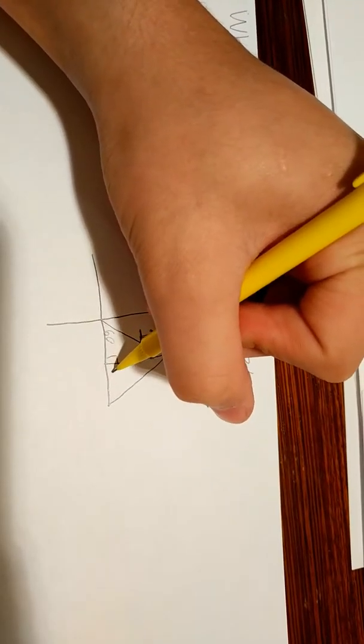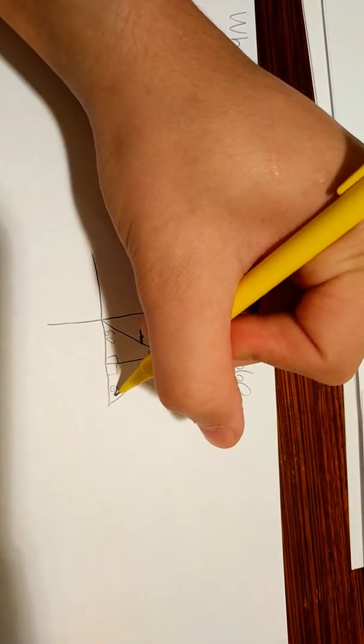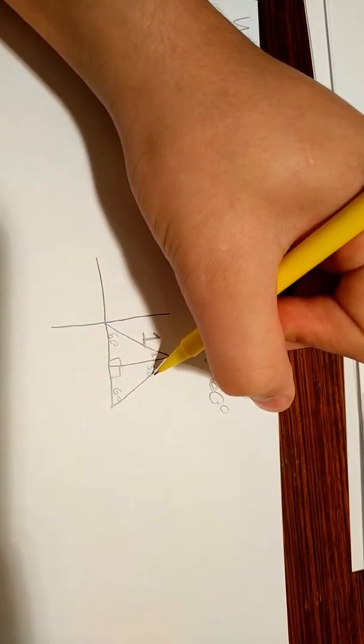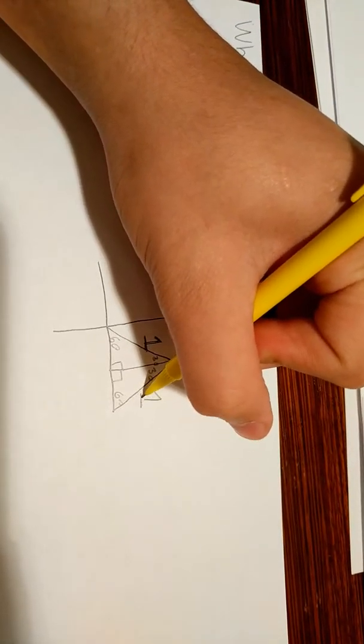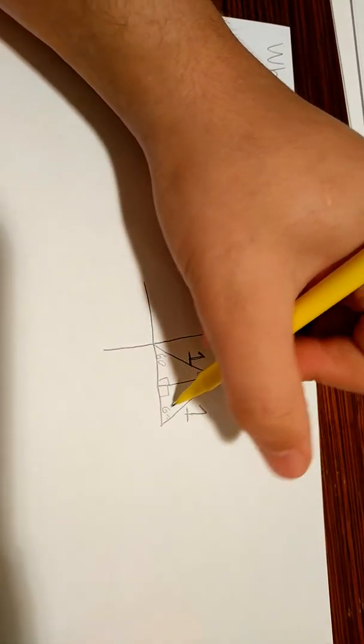I'm going to draw another triangle right over here, with this as 60, this as 30. So, that means that this also has a 1, since it's just the same thing.